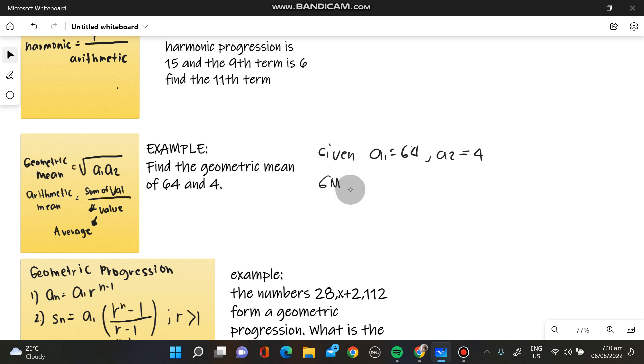Our geometric mean is equivalent to the square root of A sub 1, A sub 2. So we have the geometric mean is equivalent to square root of 64 times 4. Using the calculator, we will obtain the value of 16. So that is our final answer.